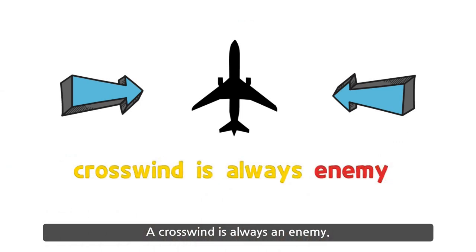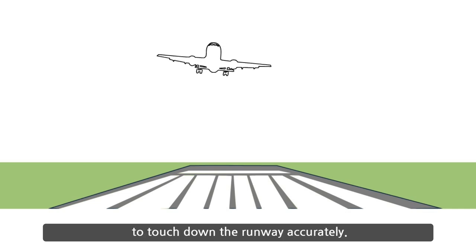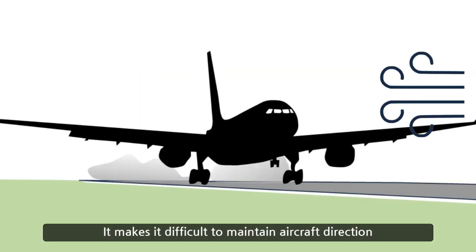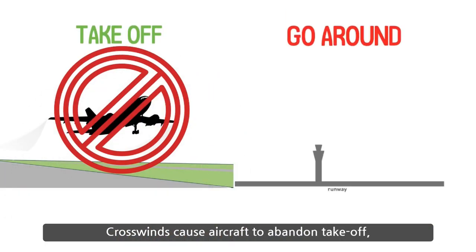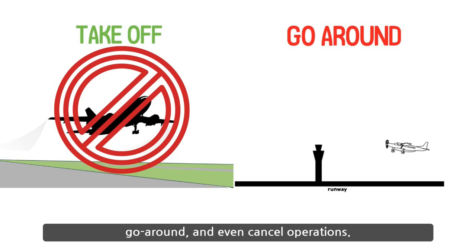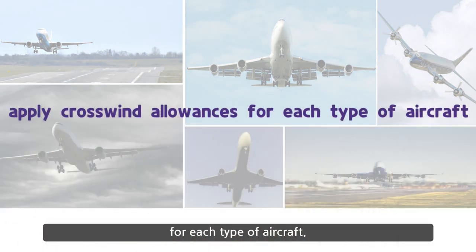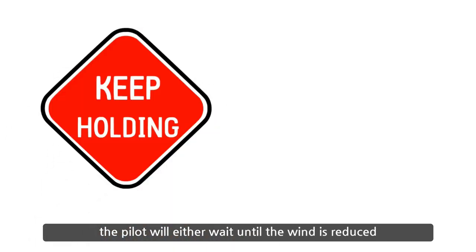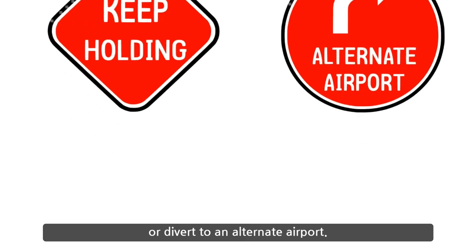A crosswind is always an enemy. The crosswind makes it difficult for aircraft to touch down the runway accurately and to maintain direction even after landing. Crosswinds cause aircraft to abandon takeoff, go around, and even cancel operations. All airline companies strictly apply crosswind allowances for each type of aircraft. If the crosswind at an airport exceeds the allowance, the pilot will either wait until the crosswind is reduced or divert to an alternate airport.